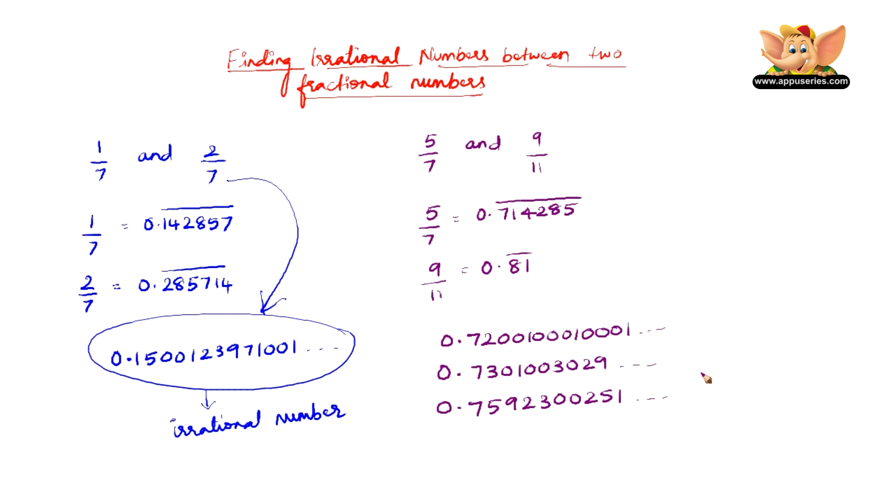So we can take these three numbers to be the irrational numbers between 5/7 and 9/11, but of course there are infinitely many irrational numbers between 5/7 and 9/11.